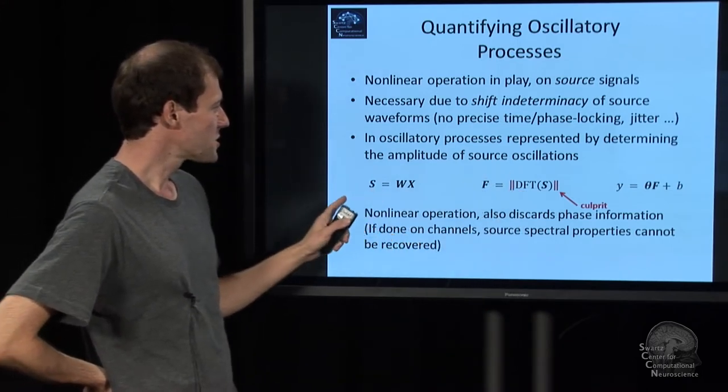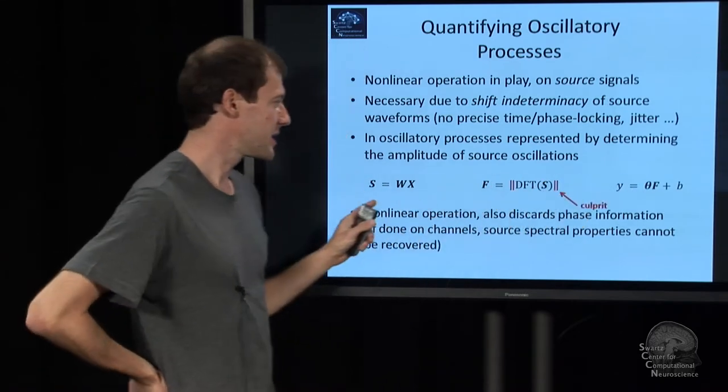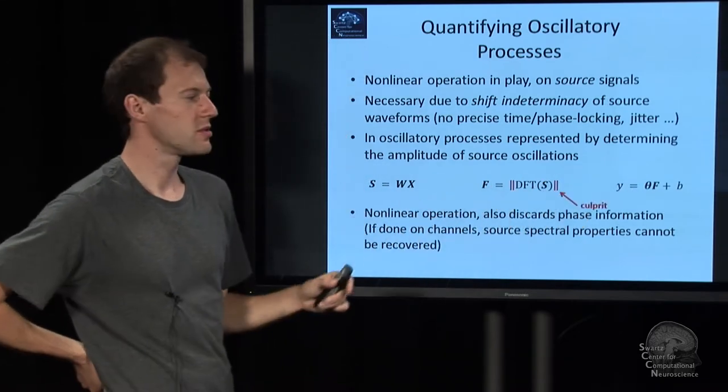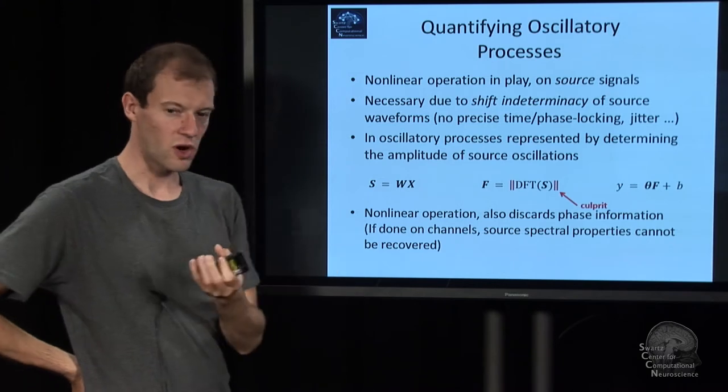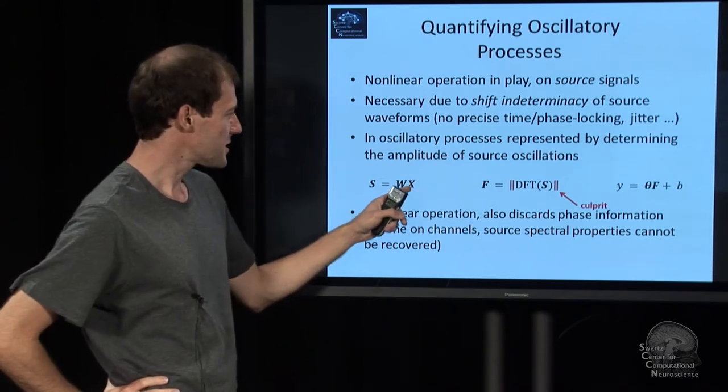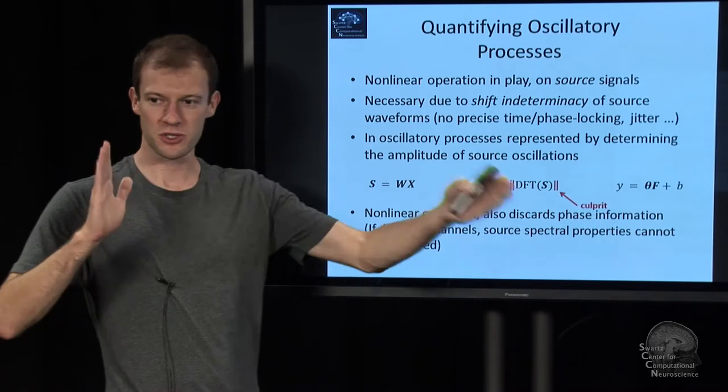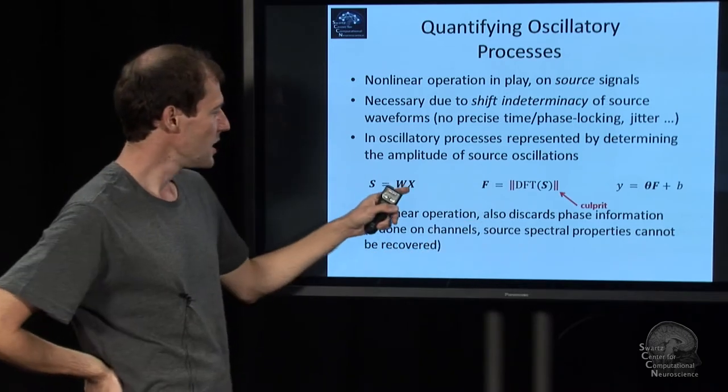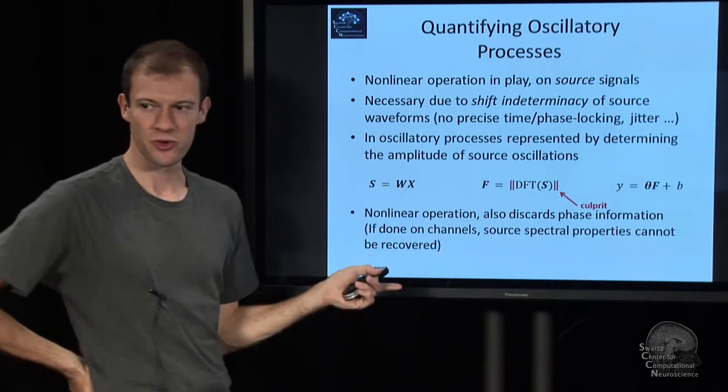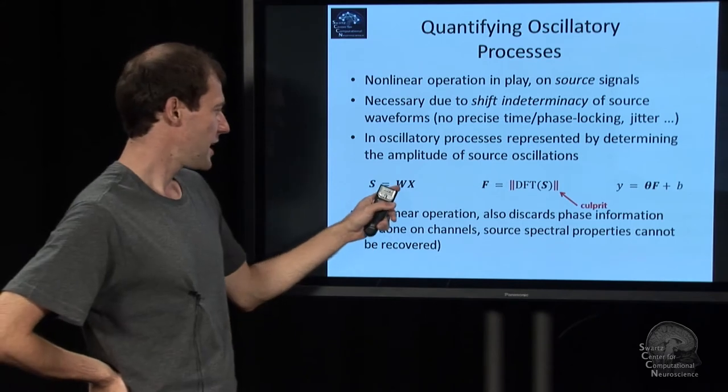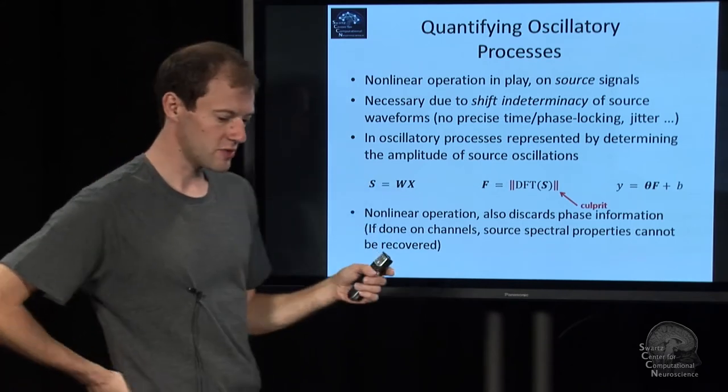So here's a very simplified three-step mapping from raw channel data, which is X here. It's a matrix of number of channels, number of time points. We take the X, we multiply it by a spatial filter W. And so we get an approximation of some spatially filtered, we call it source time courses.